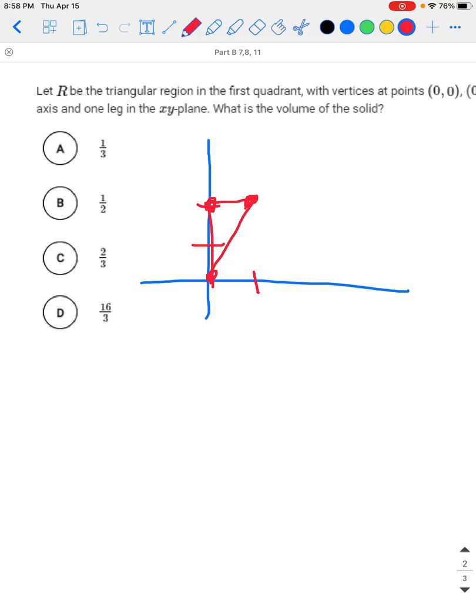For each cross-section perpendicular to the y-axis, if it's perpendicular to the y-axis, the right triangles are going this way. The right angle is on the y-axis, meaning it's coming out from the y-axis. So this is the right angle right here, and it's going to look like this.